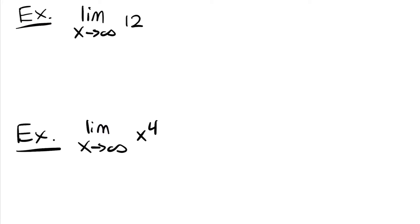We have the limit as x approaches infinity of 12. Remember, we have a rule that says whenever we're taking a limit as x approaches infinity of a constant, it's always going to be equal to that constant. So in this case, there's no variables, we just have 12, so this is going to be equal to 12. Pretty easy limit.